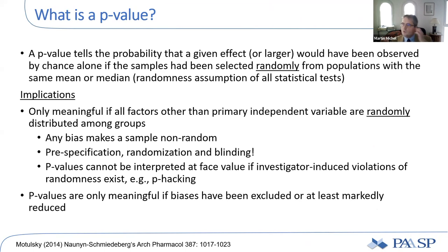This brings me to something many people don't fully understand. A p-value tells us the probability — and the 'p' stands for probability — that a given effect or larger would have been observed by chance alone if the samples had been selected randomly from populations with the same mean or median. That's called the randomness assumption, and it's the basis of all statistical tests. This means a calculated p-value is only meaningful if all factors other than the primary independent variable are randomly distributed among groups.